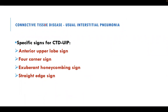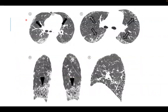There are specific signs suggesting connective tissue disease behind usual interstitial pneumonia: the anterior upper lobe sign, four-corner sign, exuberant honeycombing sign, and straight edge sign. The four-corner sign refers to honeycombing seen in all four corners — upper lobes and lower lobes. Examples will be provided in subsequent slides.